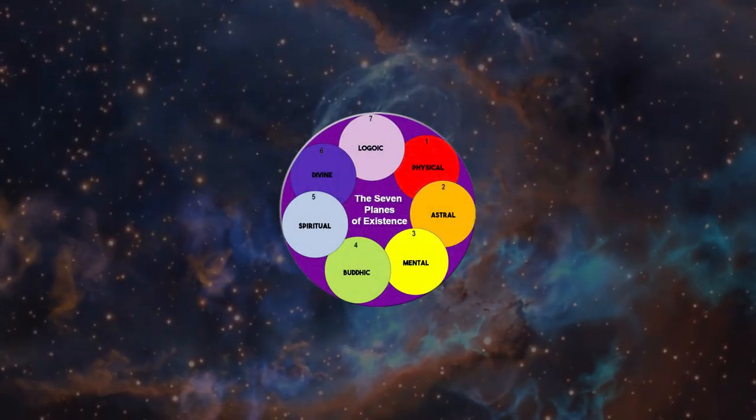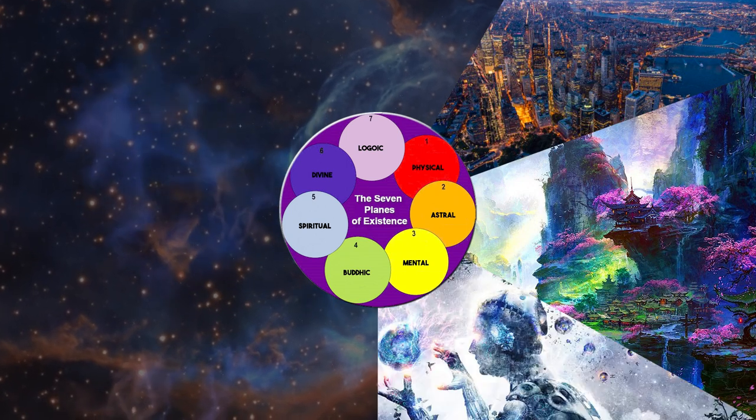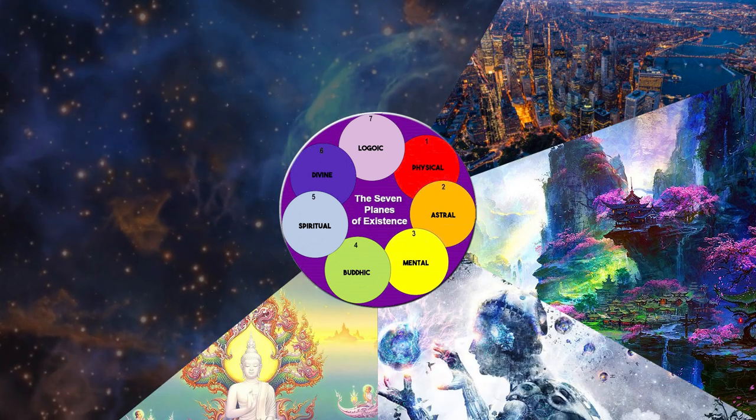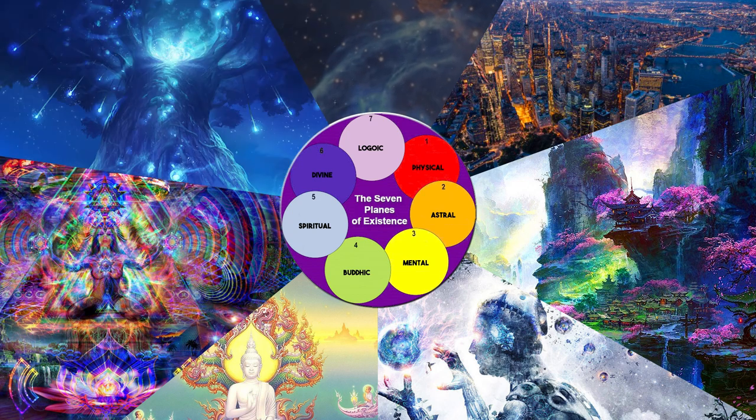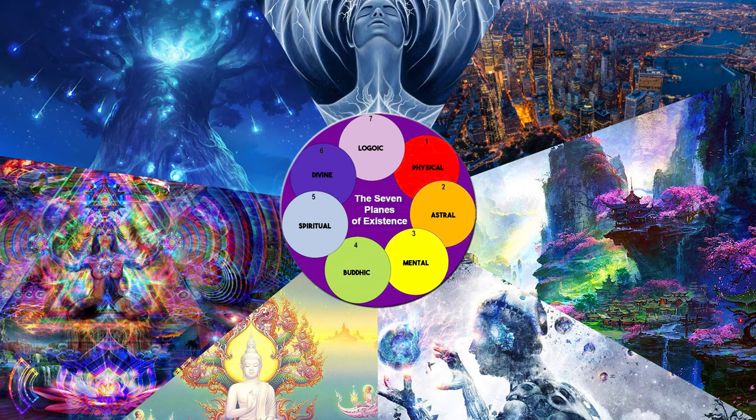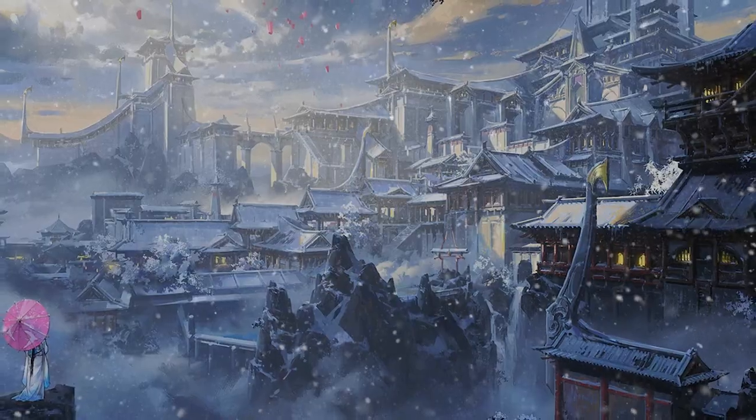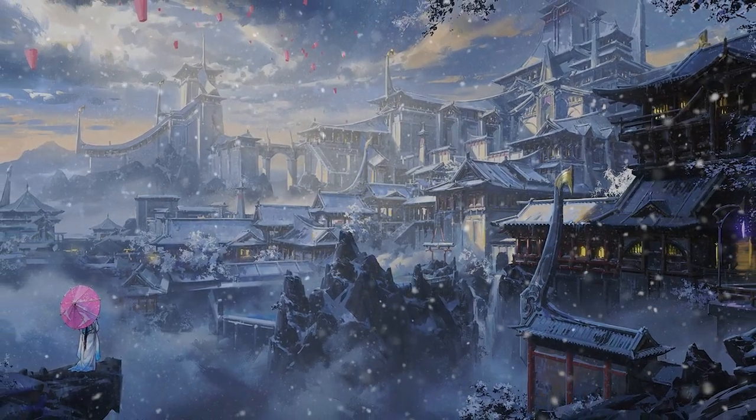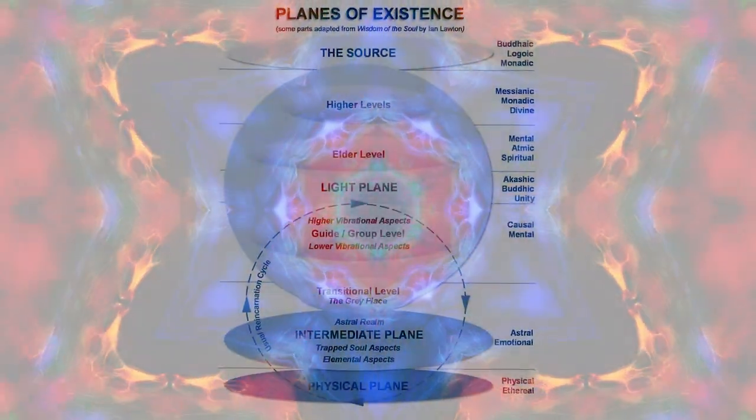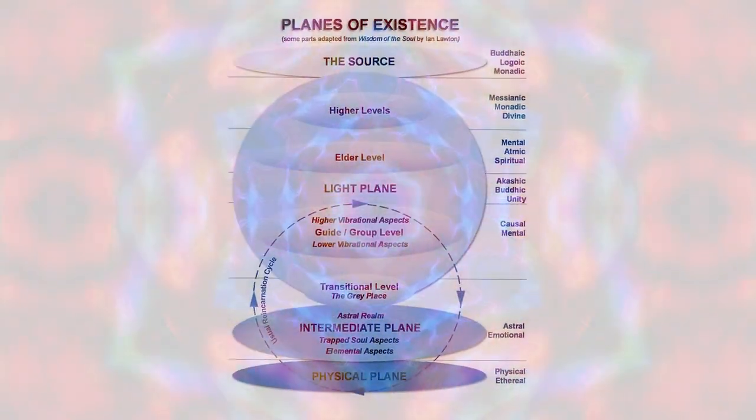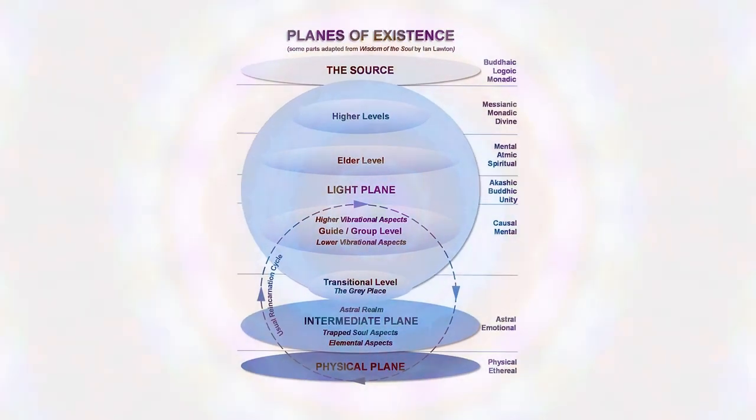These include the physical plane, the astral plane, the mental plane, the buddhic plane, the spiritual plane, the divine plane, and the logoic plane. However, we will only be looking at astral planes since astral projection is known to occur only in the astral planes. There are also some sub-levels between these seven planes which we should understand to get a clear view of astral projection.